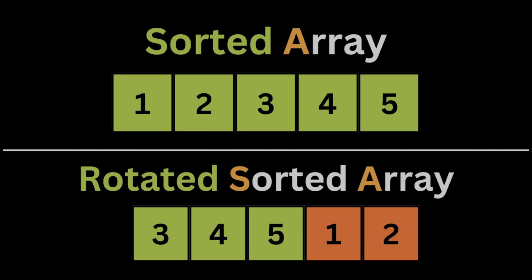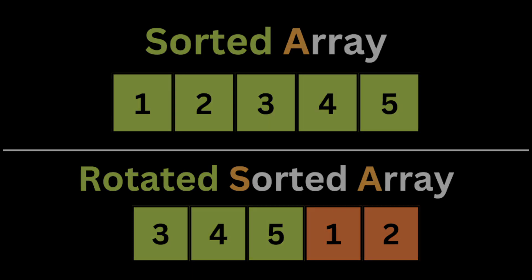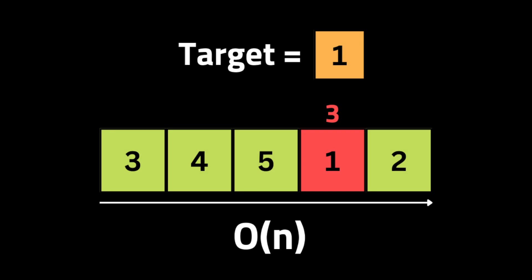First, what is the meaning of a rotated sorted array? A normal sorted array would look like a simple ascending sequence. A rotated sorted array is a data structure in which the elements are sorted in ascending order, but the array has been rotated by a certain number of positions. For example, consider the array [3, 4, 5, 1, 2] — it is sorted in ascending order but has been rotated by three positions to the right.